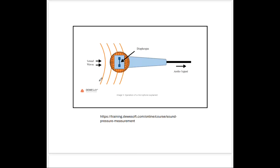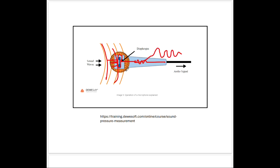A microphone works the same way almost. Sound waves come in and instead of your eardrum, they hit a diaphragm that vibrates just like your eardrum, and that diaphragm converts the mechanical vibration into an electrical signal. Again, we're measuring pressure — force over the area of that diaphragm. That electrical signal goes from high to low, high to low — analogous to the pressure waves. Hence we have the word 'analog.'